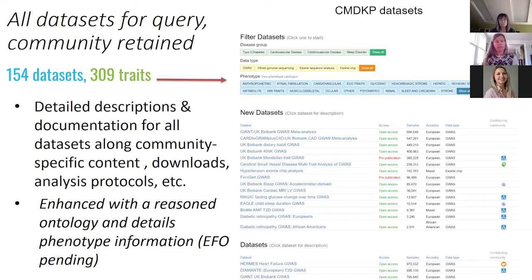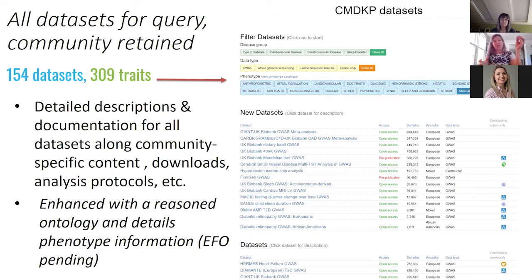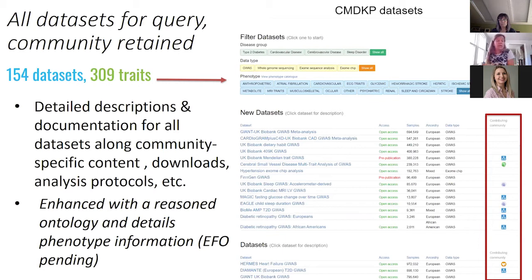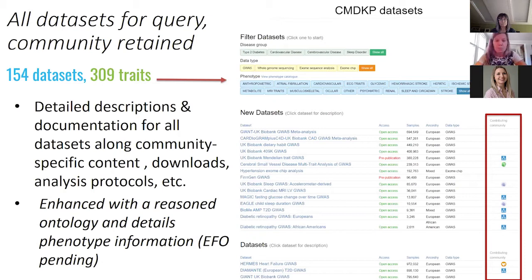First of all, the most important thing from my perspective is the integrity of the data within. All data sets are available for query in the common resource — these now total 309 traits across 154 data sets. All the provenance, documentation, proper citations, and analysis protocols are tracked and aggregated here, and you can see which community they came from. As we expand to common metabolic disease, we need a more reasoned ontology because there are many more traits, so we're going to be using the EFO terminology.